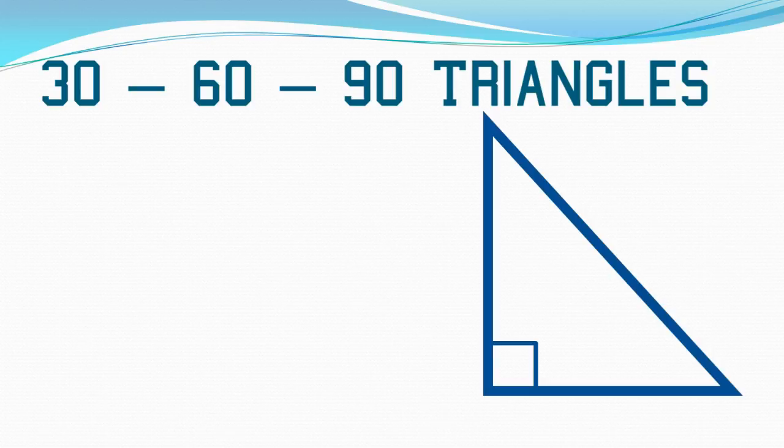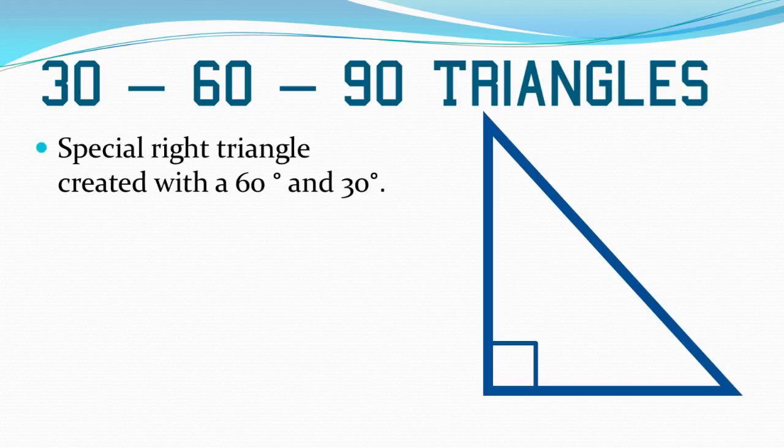The first triangle that we'll look at is a 30-60-90 triangle. The triangles are named by the angles that they're made up of. So a 30-60-90 triangle is a special right triangle that's created with a 60 degree and 30 degree angle. So one of the angles has to be 90, one is 30, one is 60.